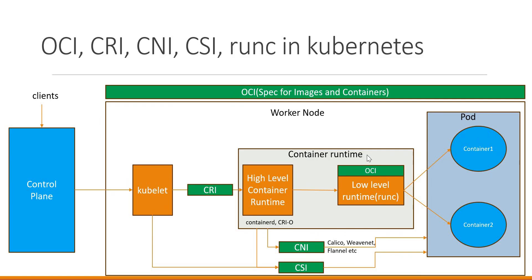The container runtime can be categorized into high-level container runtime and low-level runtime. To run the containers, they need container images. Those container images will be pulled by the high-level container runtime like containerD, and then this will call the low-level runtime like RunC to create the containers using that image. The low-level runtime interacts with kernel features like namespaces, control groups and so on while creating the containers in the pod.